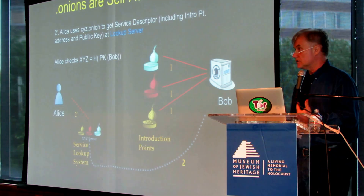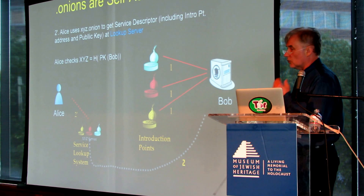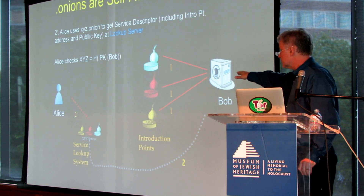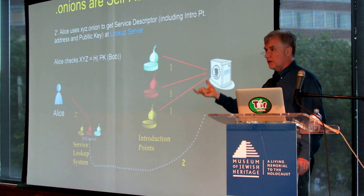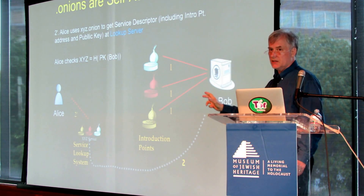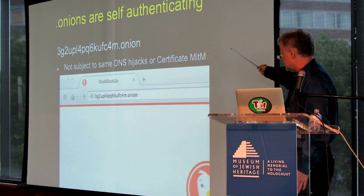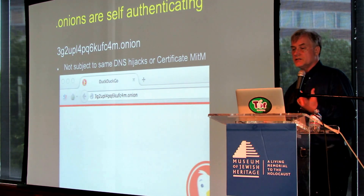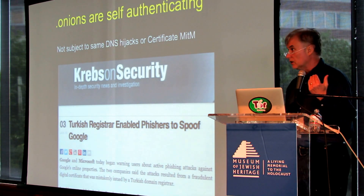One of the most important is that Onion addresses are self-authenticating. So if Bob's address in the lookup system is XYZ.onion, when Alice looks at the encryption key that she uses to talk to Bob's server, there's a simple function that the software on your computer will do that will confirm that this function of that public key is the address. So if she's able to speak encrypted using that key, she is guaranteed to be going to this XYZ.onion address — she just can't make that mistake. Here's an example: DuckDuckGo has this as its .onion address. Because it's self-authenticating, you're not subject to DNS hijacks or certificate man-in-the-middle attacks.